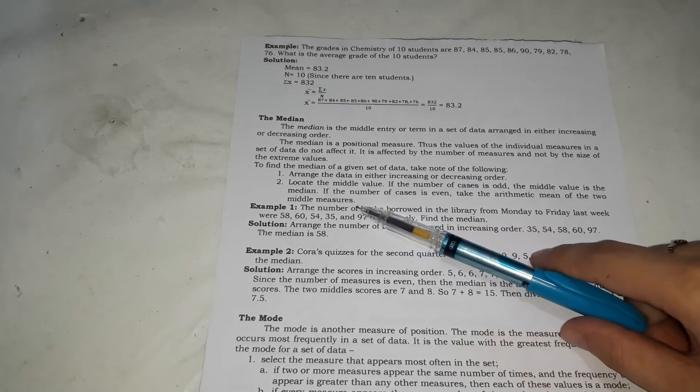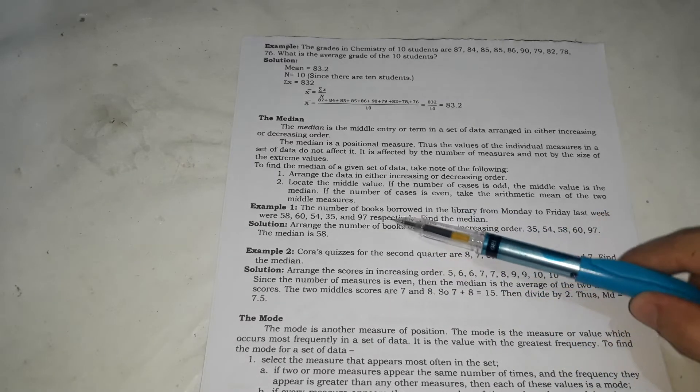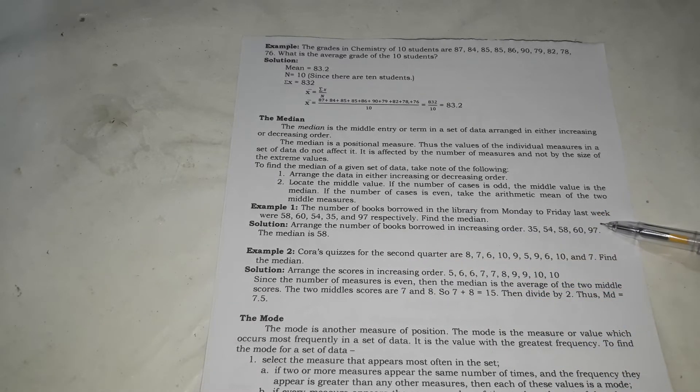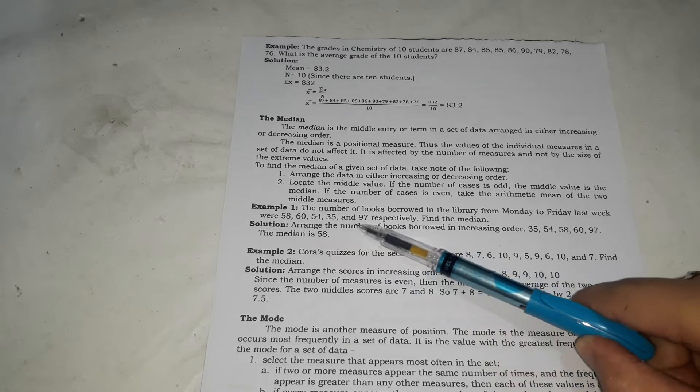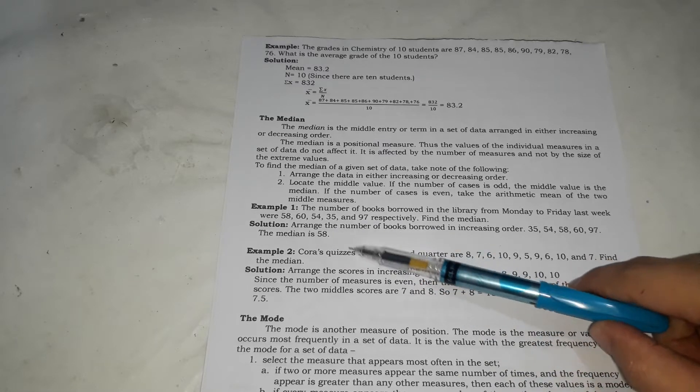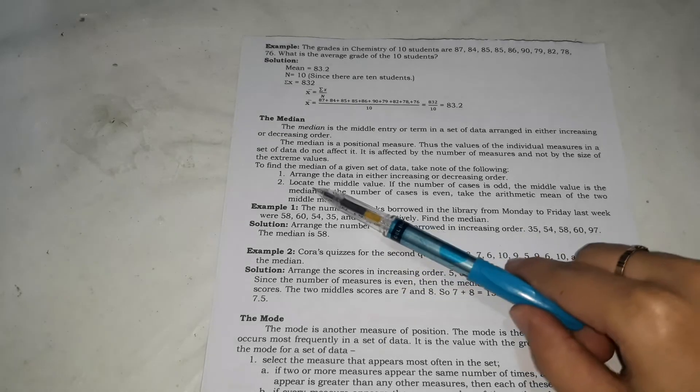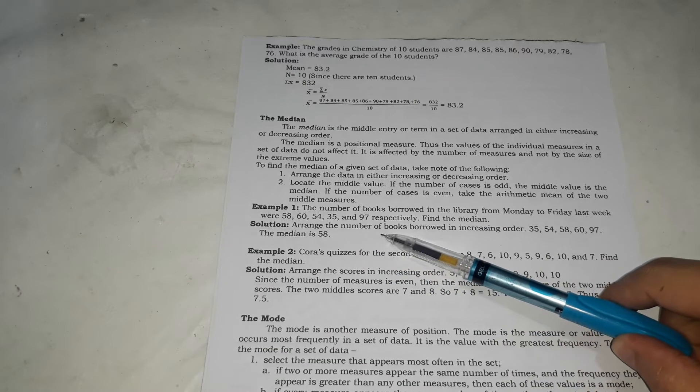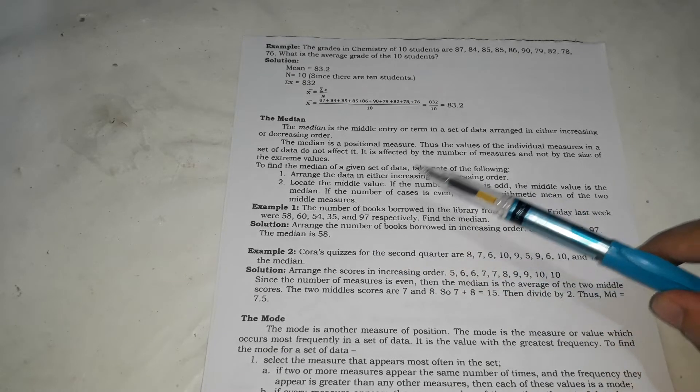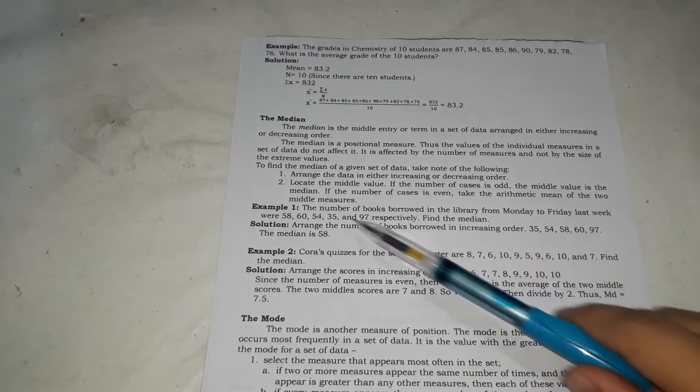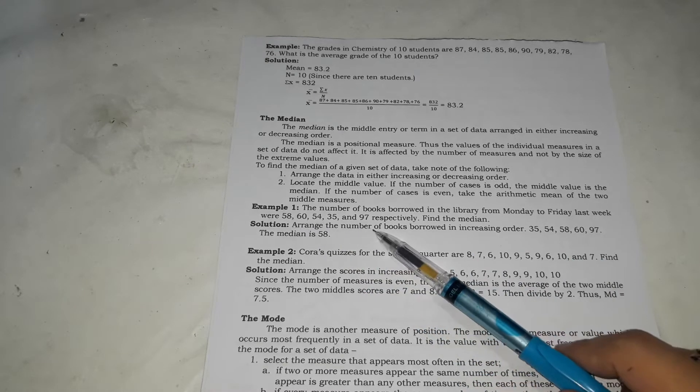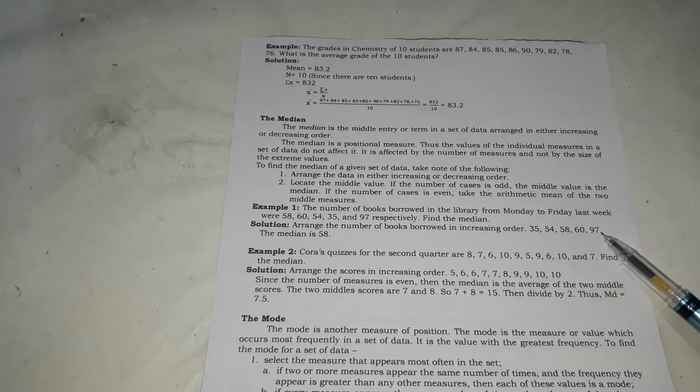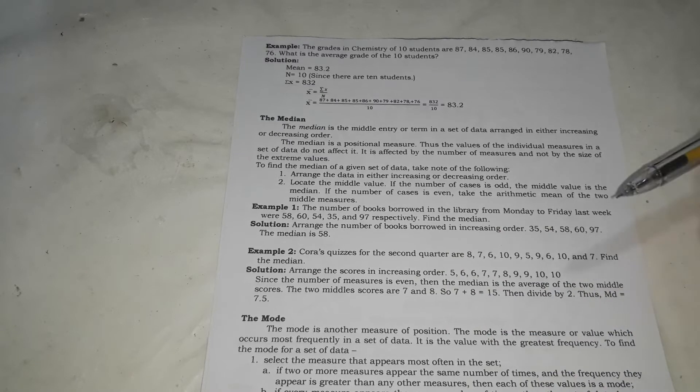So para kukunin yung mean, this is what you're going to do. For example number one, the number of books borrowed in the library from Monday to Friday last week were 58, 60, 54, 35, and 97. So from Monday to Friday, ito yung mga bilang ng mga libro na hiniram. So to find the median, what you're going to do first is to arrange the data. So i-arrange mo yung data from lowest to highest or highest to lowest. In here, inarrange yung data from highest to lowest. So 35 mauna, sunod si 54, sunod si 58, sunod si 60, tapos si 97. So inarrange siya. Tapos identify mo lang yung nasa gitna. So in here, ang nasa gitna si 58.